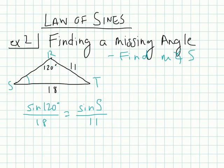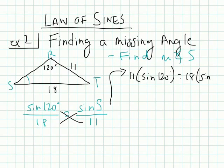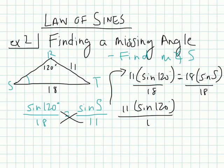So just like the last problem, we're going to use cross products to write our equation, cross products property. And we're going to have, I'll write this up here. 11 times the sine of 120 equals 18 times the sine of angle S, which we don't know. And you could see, well, we'll just keep moving along here. I'm going to divide both sides by 18. So we have 11 times the sine of 120 over 18 equals the sine of our missing angle here, S.